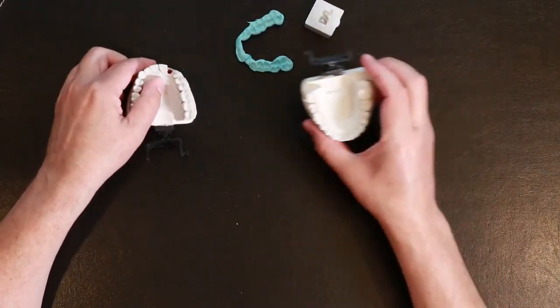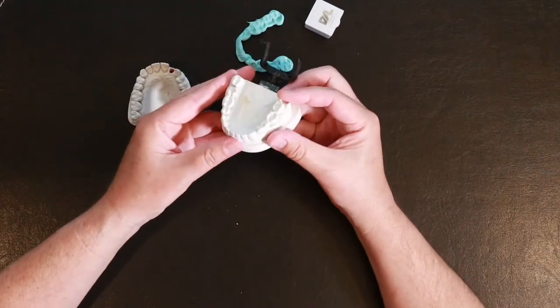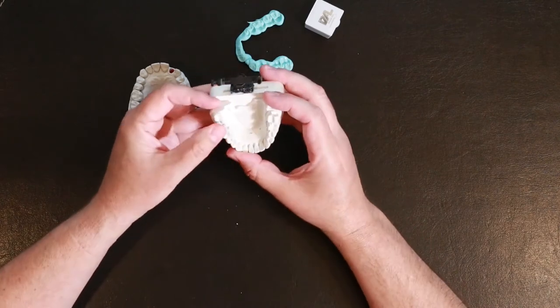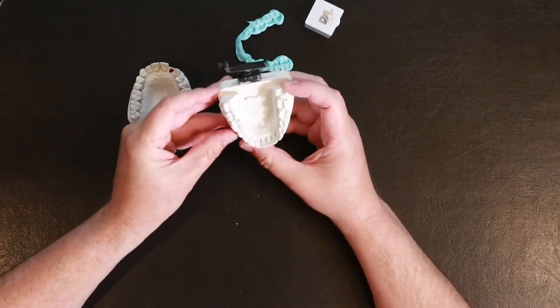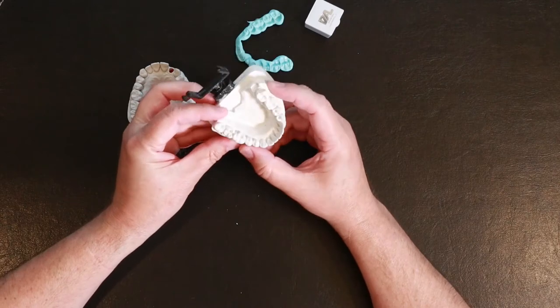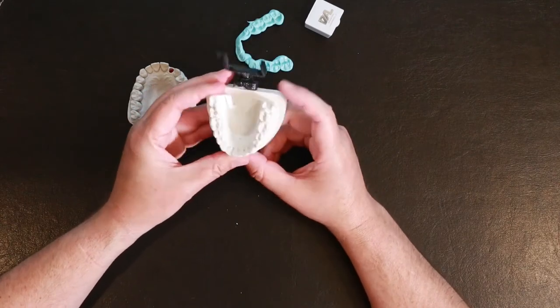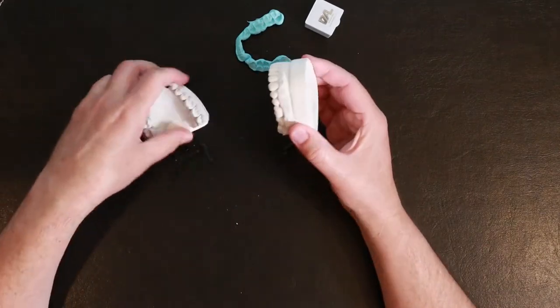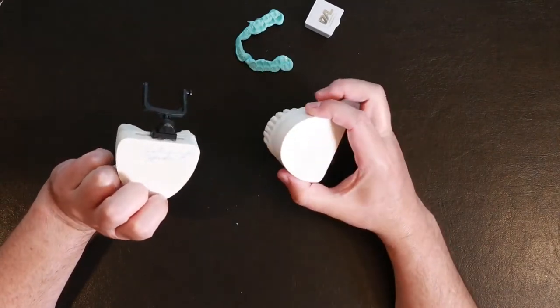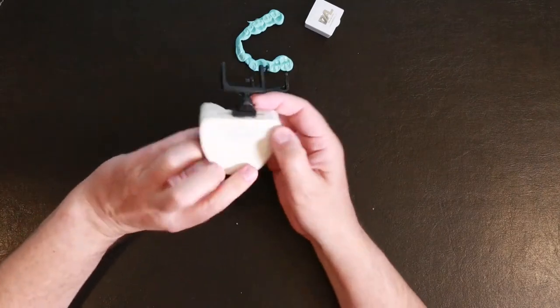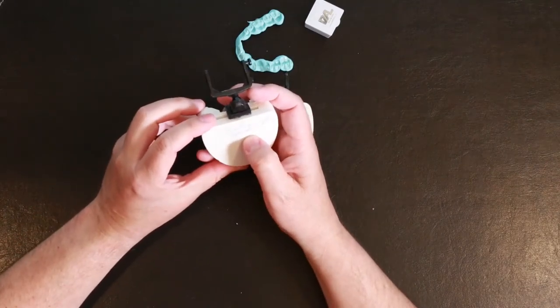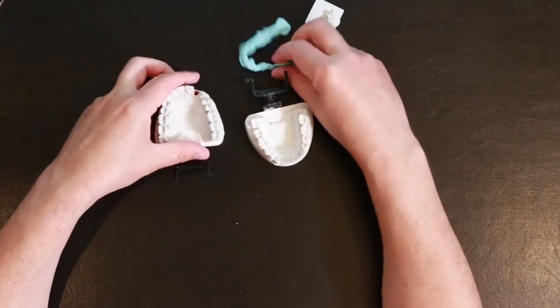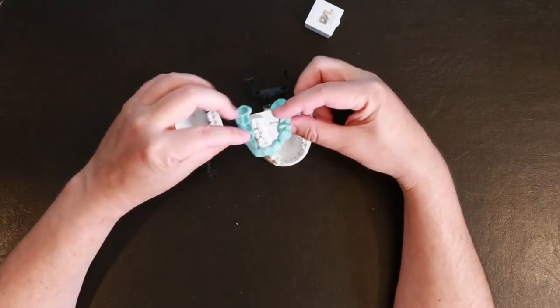This was the lower model that I poured up from that alginate impression that I took. I poured this up in my office and I sent it to them. And then they mounted it, put nice plaster bases, even labeled it my last name and that it's for a typodont. And then this is the bite registration I took and this showed them how the teeth fit together.